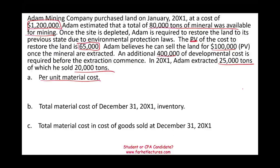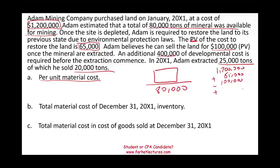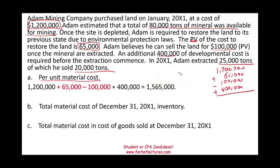To compute the cost per unit, we first figure out our total investment. Our cost is $1.2 million for the land, plus $65,000 for the environmental restoration cost, minus $100,000 we get back from selling the land, plus $400,000 of developmental cost. That gives us a total cost of $1,565,000. We divide by the total output of 80,000 tons, giving us a cost per ton of $19.5625.